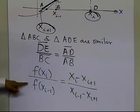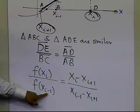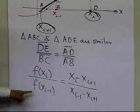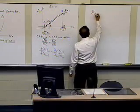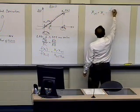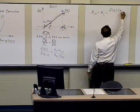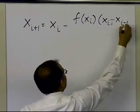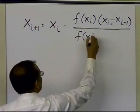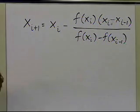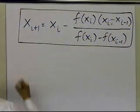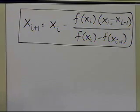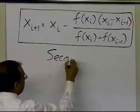So you can see that in this case, if x_{i-1} is one initial guess and x_i is the other initial guess, then the only unknown is x_{i+1}. The bottom line is to solve this simple linear equation for x_{i+1}, and after a little bit of algebra we get the formula for x_{i+1}. This is nothing but the formula for the secant method.